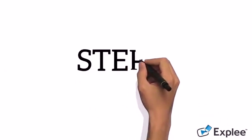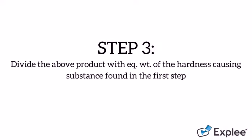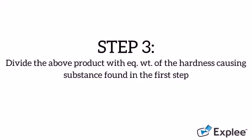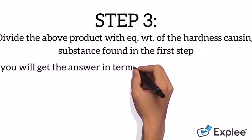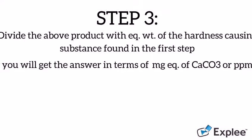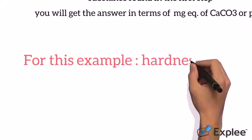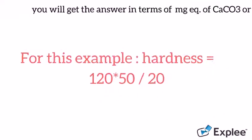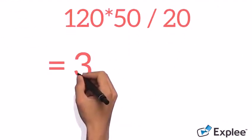Step 3 is to divide the product that we just got with the equivalent weight of the hardness causing substance. So we will get the answer in terms of mg's equivalent of CaCO3 or ppm. For this example, it will be 120 into 50 divided by 20 which is 300 ppm.